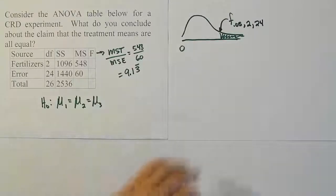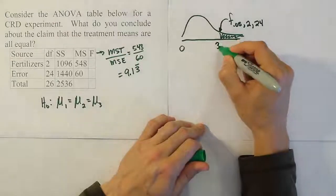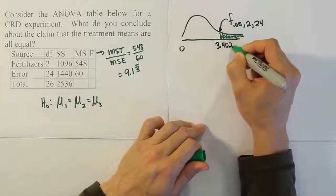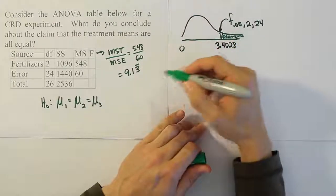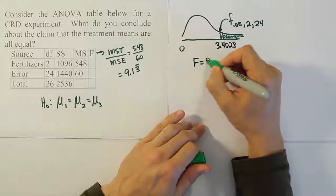So we found the value 3.4028 as our critical value. We'll compare our test stat F against that.